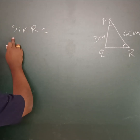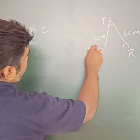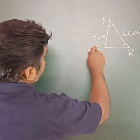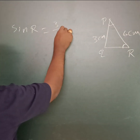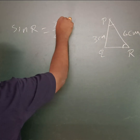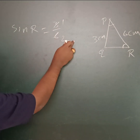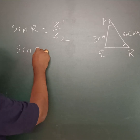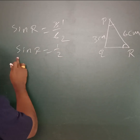Sin R equal to opposite side over hypotenuse. The opposite side is 3 and the hypotenuse is 6. So sin R equals 3 by 6, which simplifies to 1 by 2.